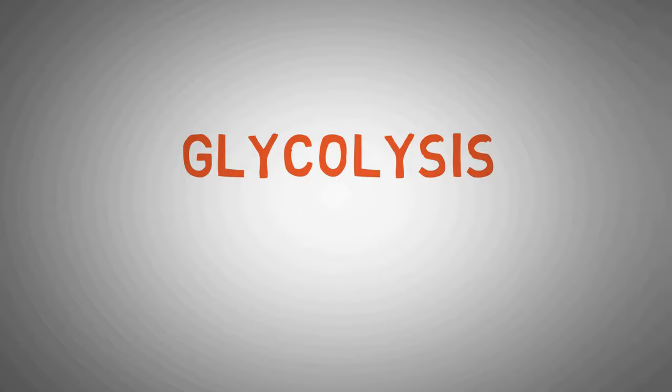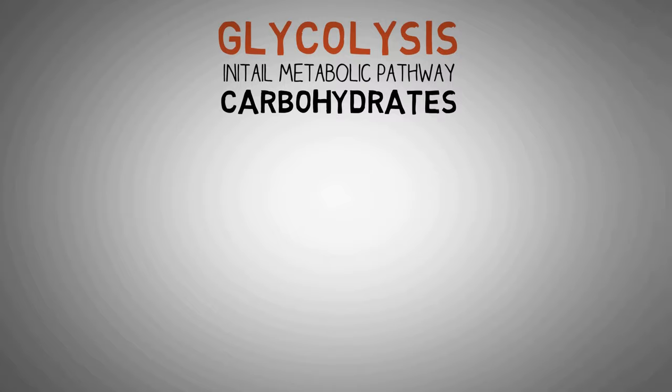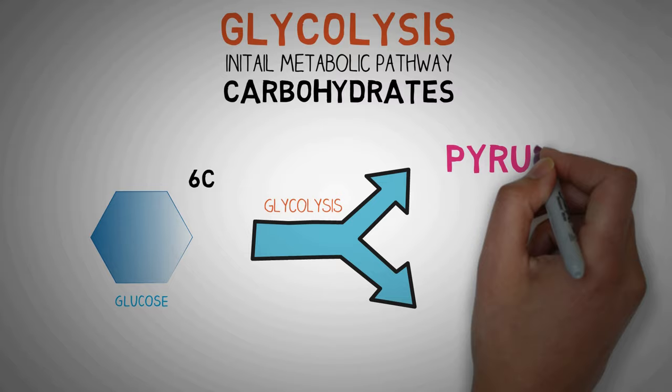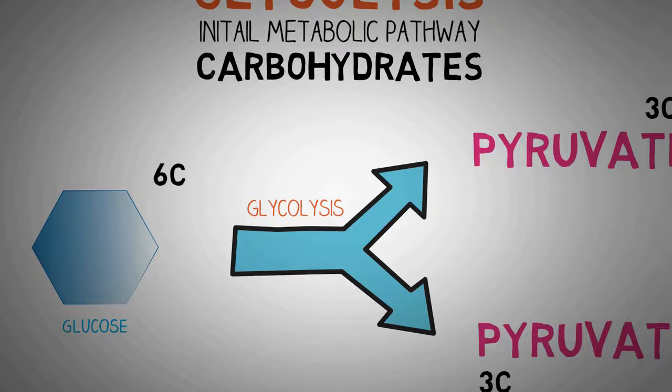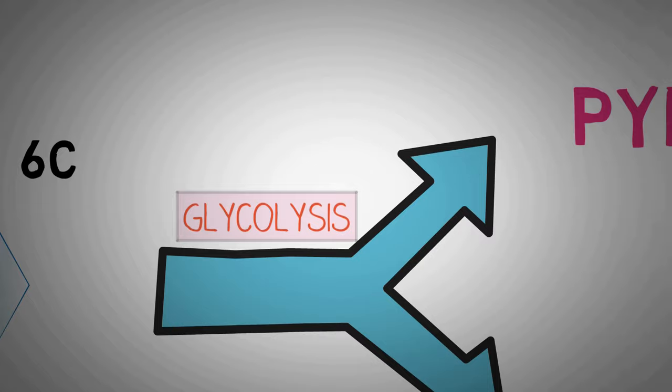So glycolysis is the initial pathway of metabolism of carbohydrates. Through the pathway of glycolysis, glucose, which is a 6-carbon compound, is broken down into two molecules of pyruvate, which is a 3-carbon compound. This is why this is known as lysis or breakdown, since glucose is being broken down into smaller fragments known as pyruvate.